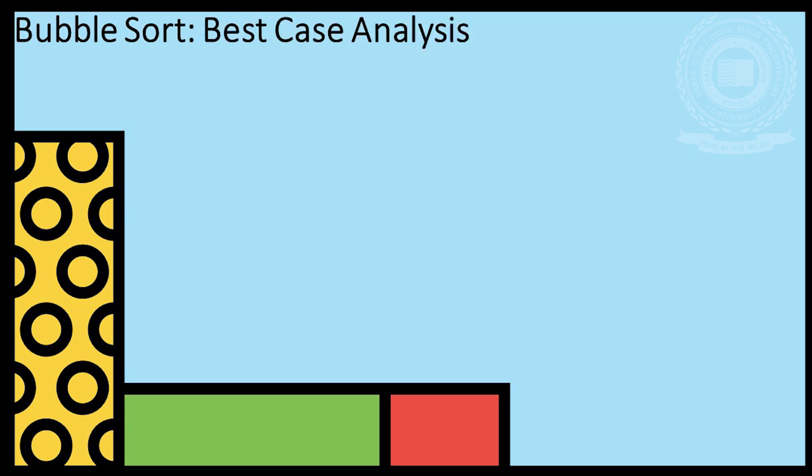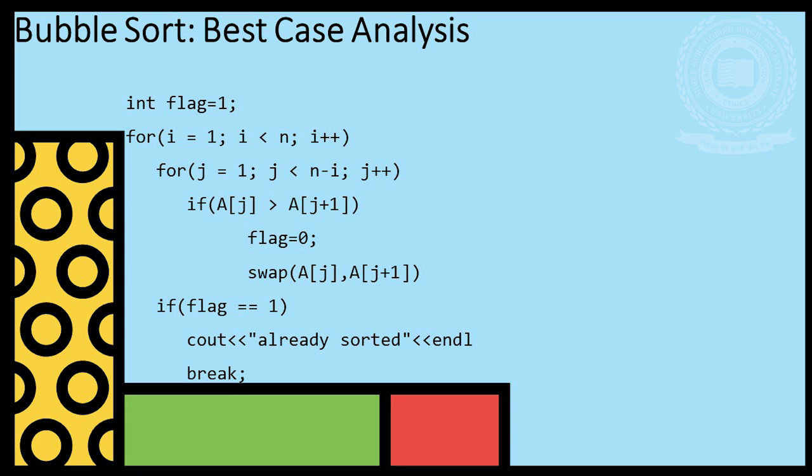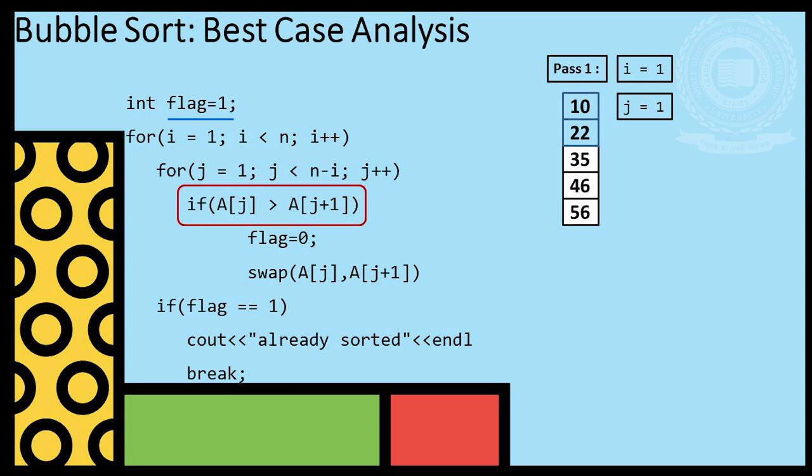Let's discuss the best case analysis for bubble sort. For best case in pass 1, swapping condition will never be executed. So, we exit the code. As array is already in sorted order, only one pass is executed and time complexity is theta n.